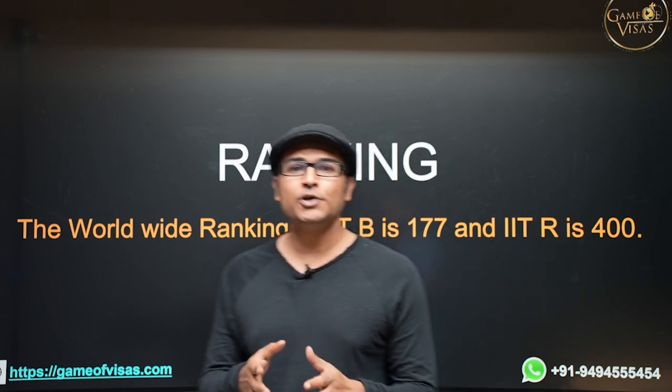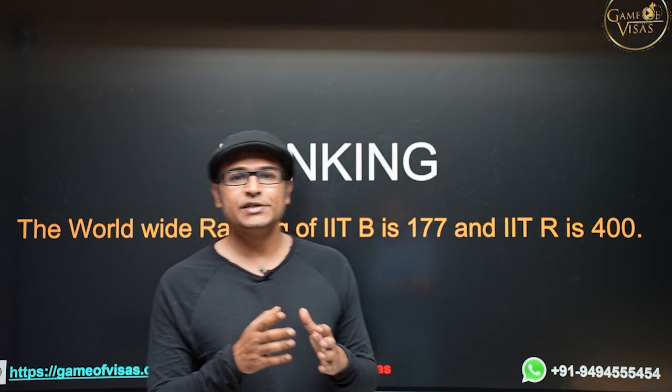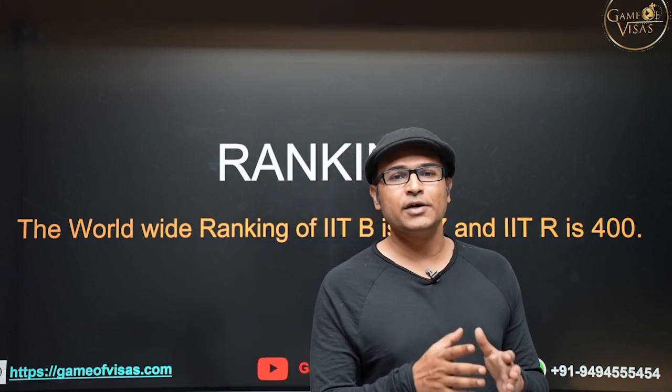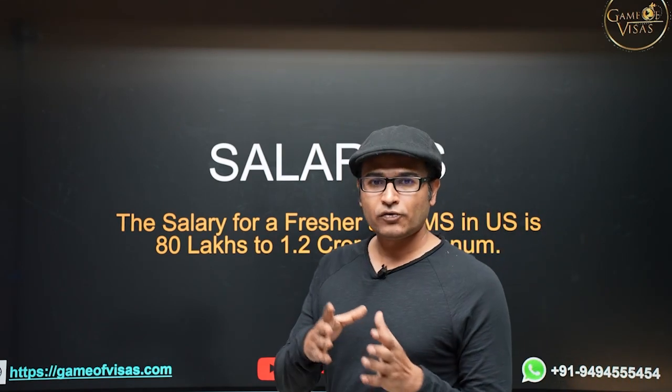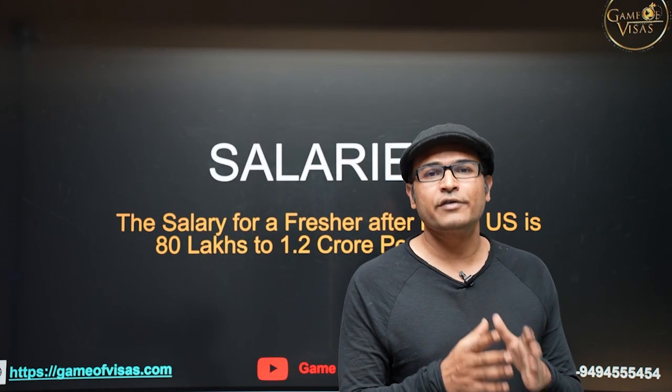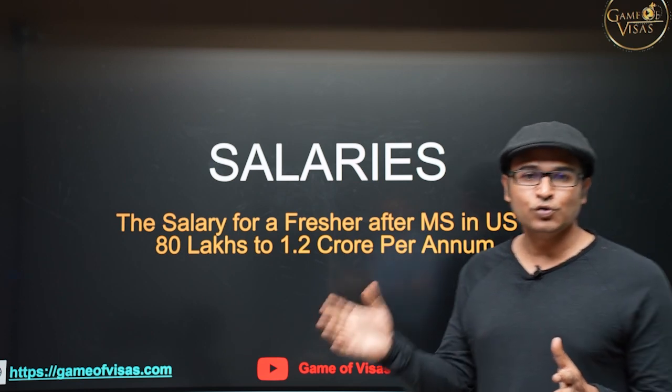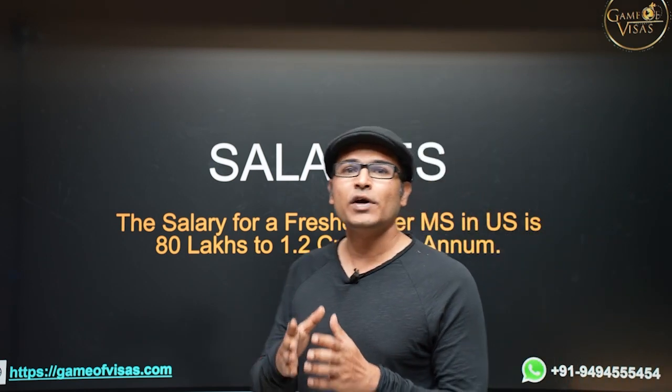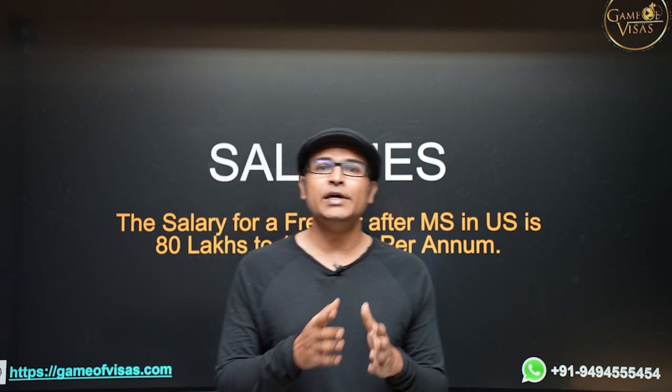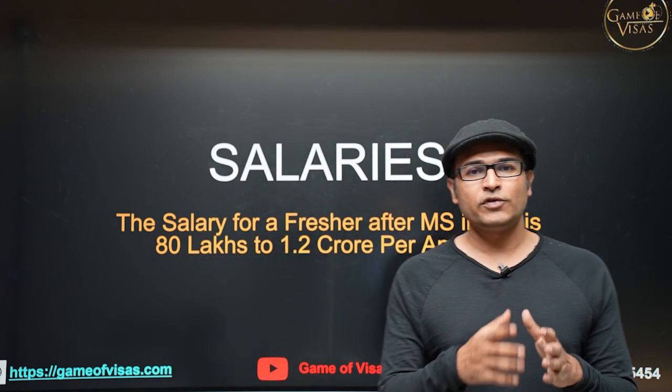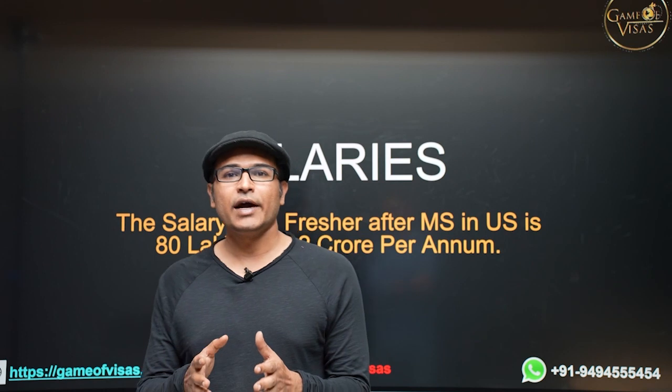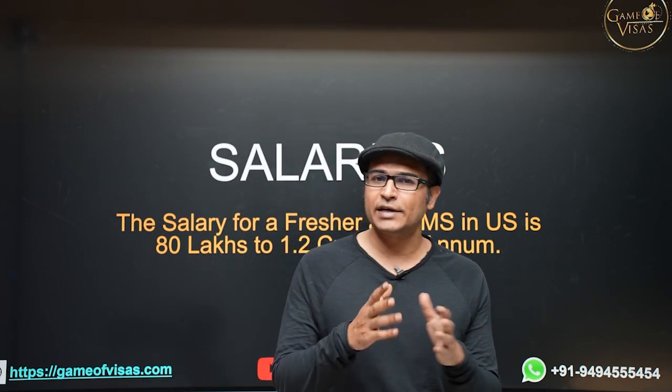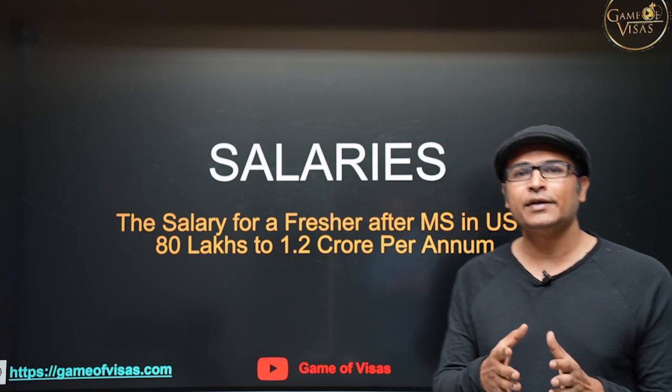And if you are working hard to get into IIT Bombay, IIT Bombay's ranking is 177 and IIT Roorkee's ranking is 400. If you are happy to get into IIT Roorkee, then getting into universities better than IIT Roorkee is easier compared to getting into IIT Roorkee. And looking at the salaries for computer science, for software jobs, if you have done your masters in computer science in US, the salaries are ranging from 80 lakhs per year to 1.2 crore per year. So even if you take an average of 1 crore per year, your savings will be much higher than the salaries in India. After taxes and your cost of living, you can easily save 40 to 50 lakhs per year. And in India, the maximum jobs that you get is around 30 lakhs, so your savings will be much greater than the salaries in India.